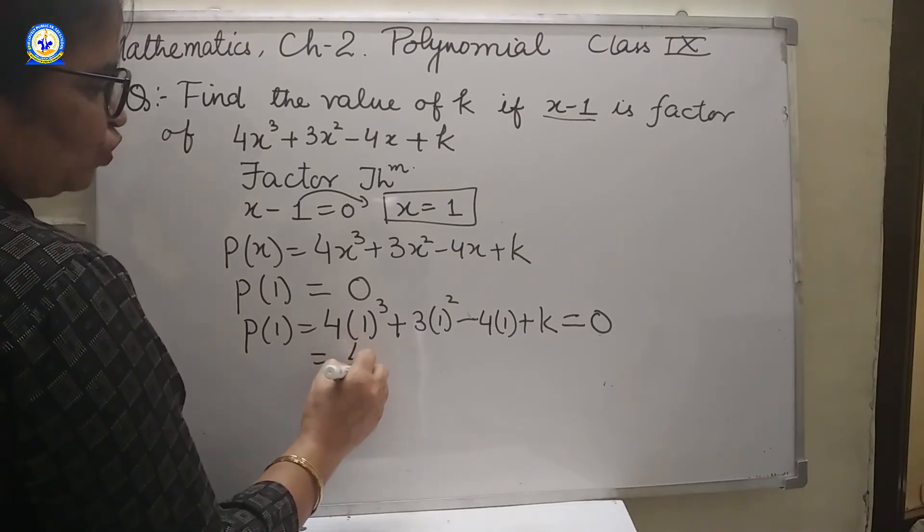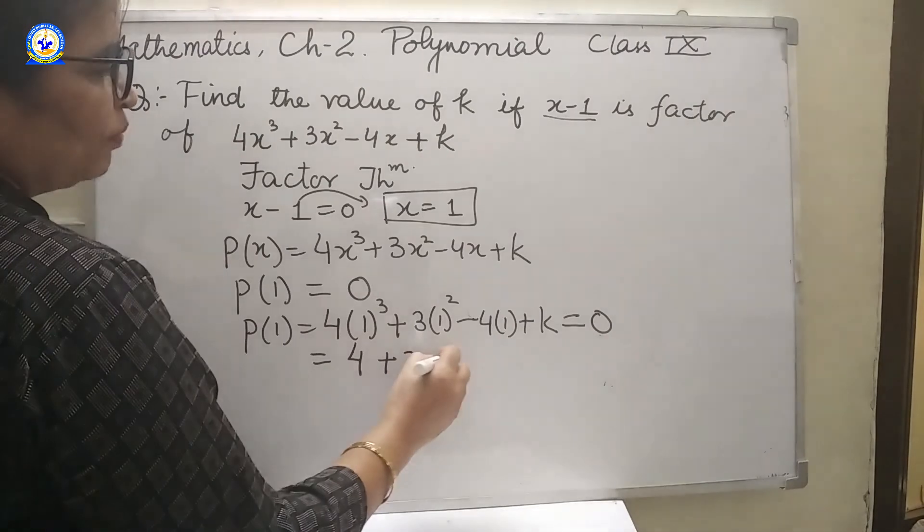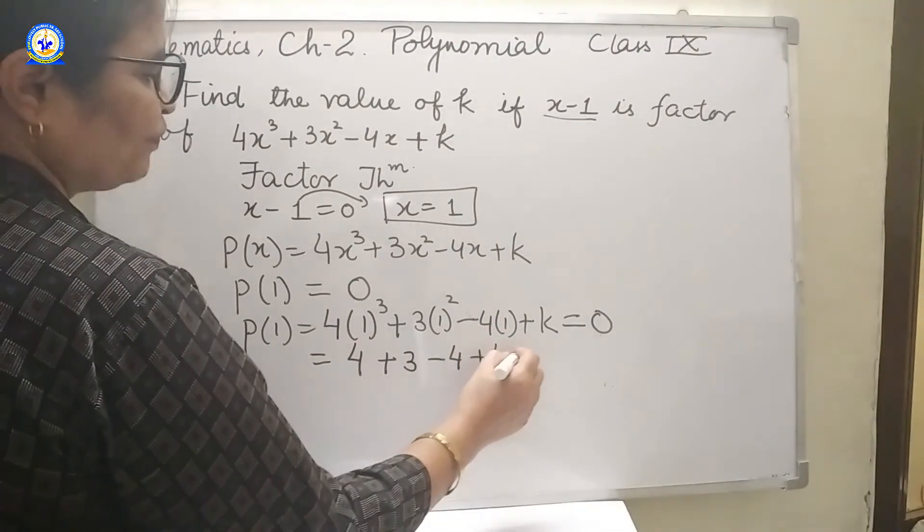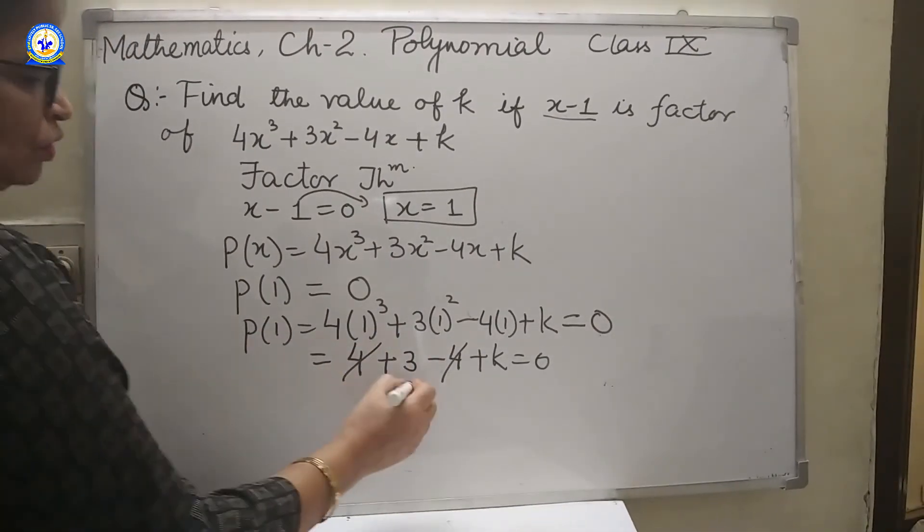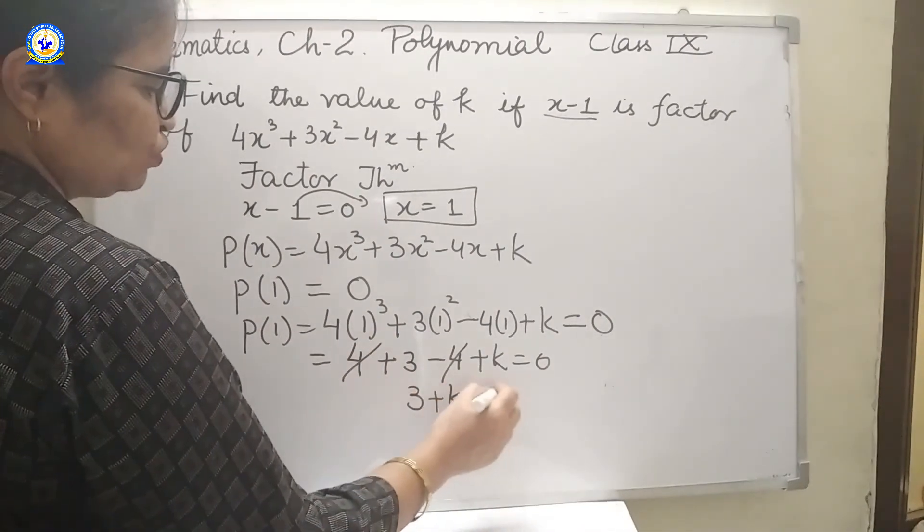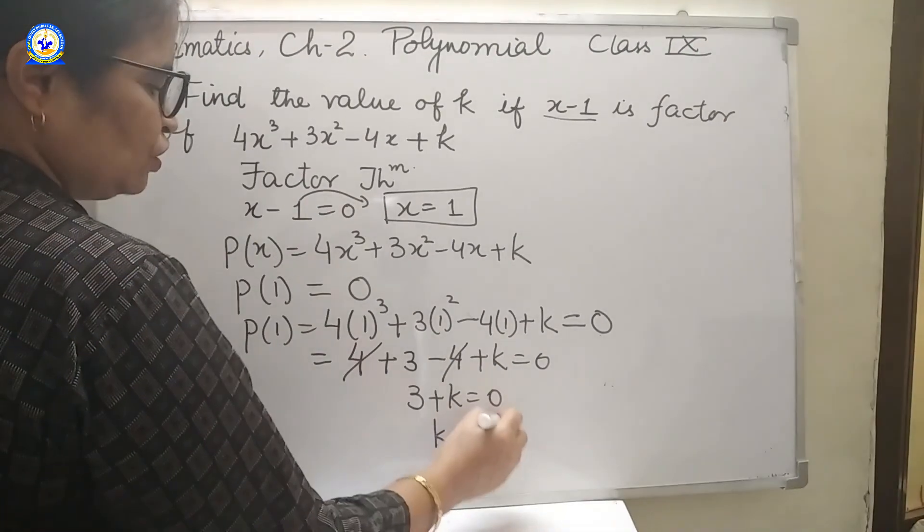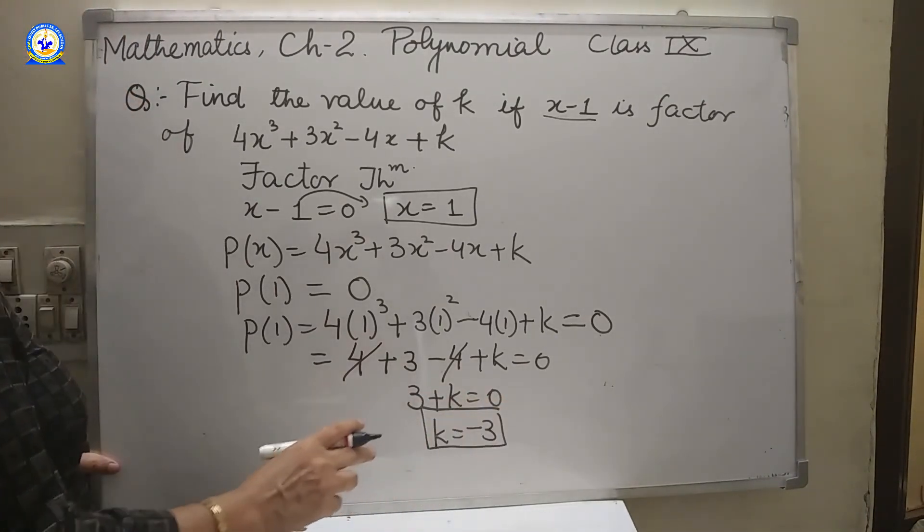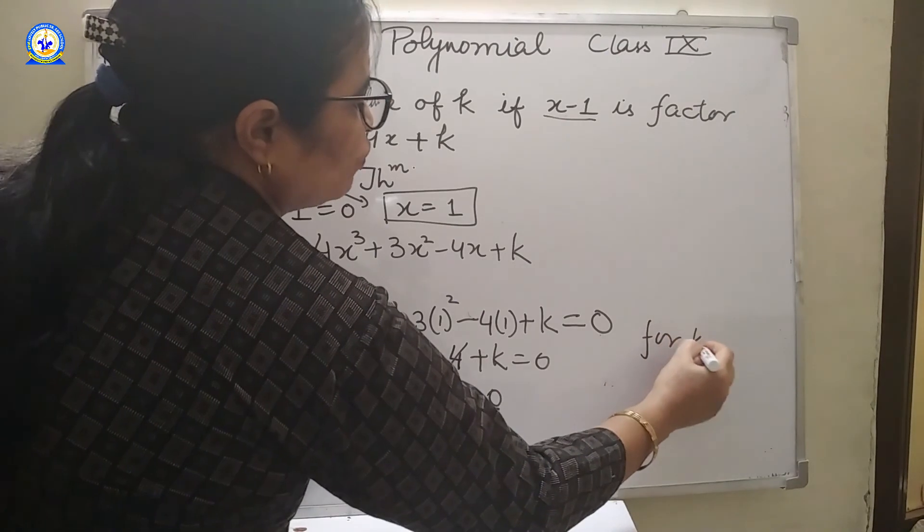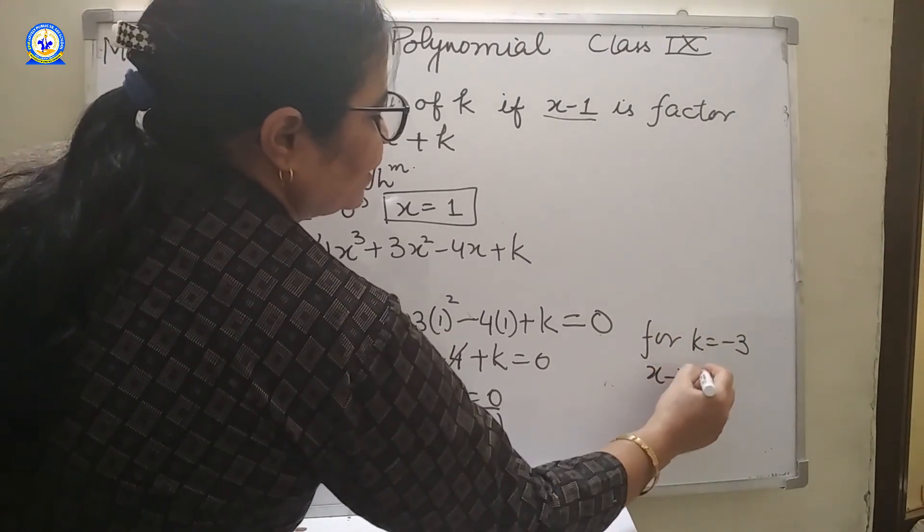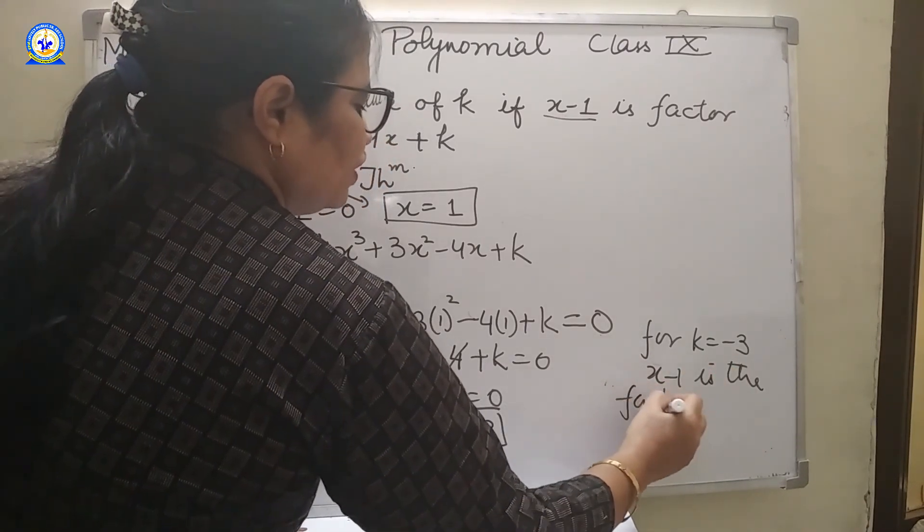4 into 1 cube is 4. 3, 1 square is 1 into 3 minus 4. 4 ones are 4 plus k. Now minus 4 plus 4. So 3 plus k equal to 0. k equal to 3 will go on that side. So for value, k equal to minus 3. For k equal to minus 3, x minus 1 is the factor of given polynomial.